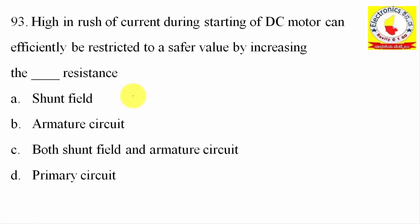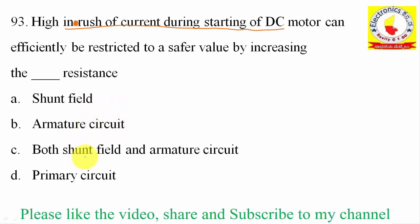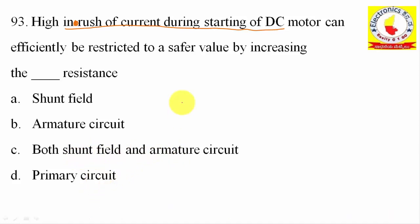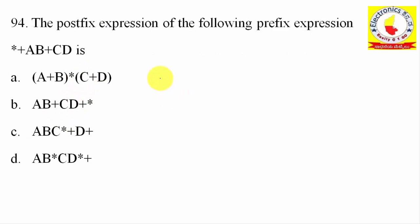93rd question: High inrush current during starting of a DC motor can efficiently be restricted to a safer value by increasing the resistance of the — shunt field, armature circuit, both, or primary circuit? The answer is armature circuit. Option B.